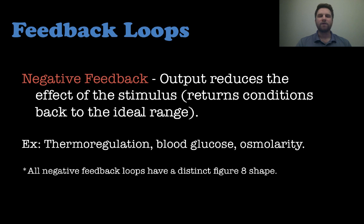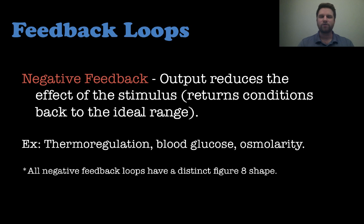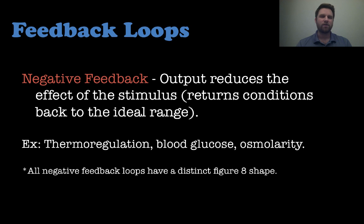There is also a negative feedback loop, where the output reduces the effect of the stimulus, trying to return conditions back to ideal ranges. These are the ones we'll talk about further: thermoregulation, the regulation of body temperature, the regulation of blood glucose, and osmolarity. All negative feedback loops have a distinctive figure-8 shape, which I'll show in a graphic.